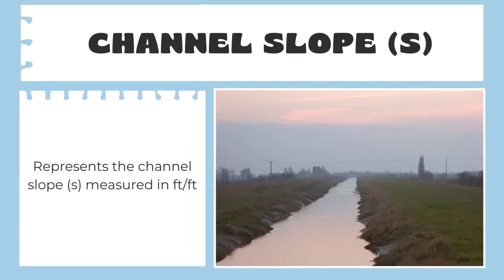For channel slope, which is represented by S, it represents the channel slope measured in feet per feet. This one's pretty straightforward. You're just going to measure the drop and the distance of that channel over that specific length to determine the channel slope.